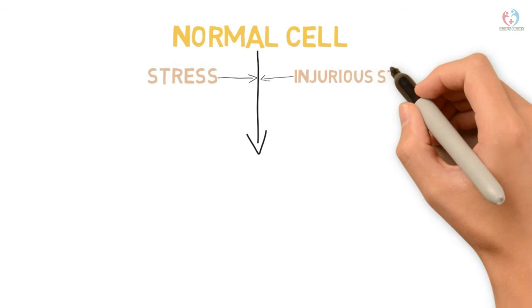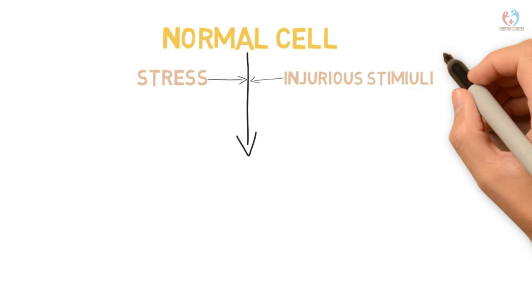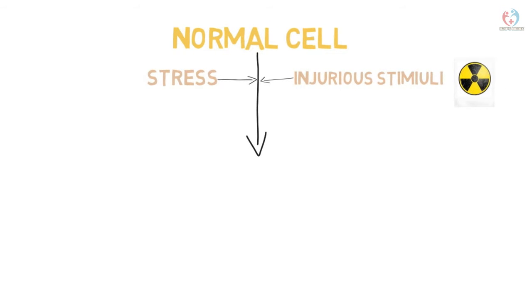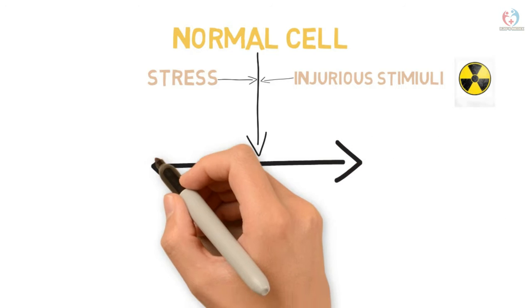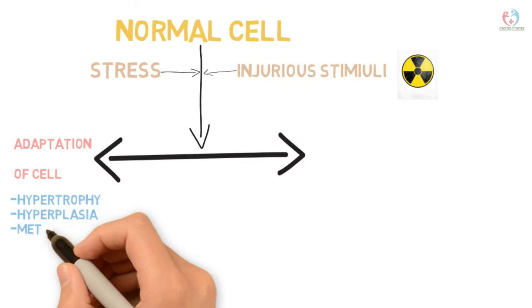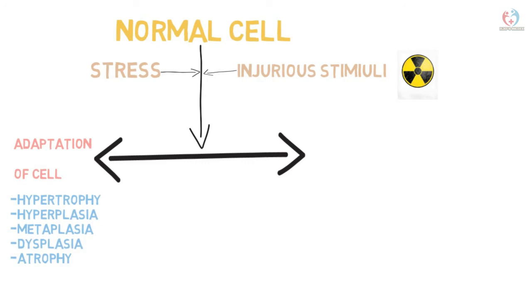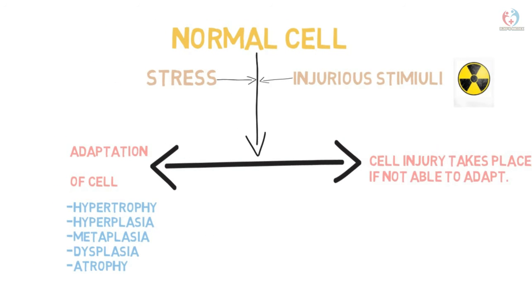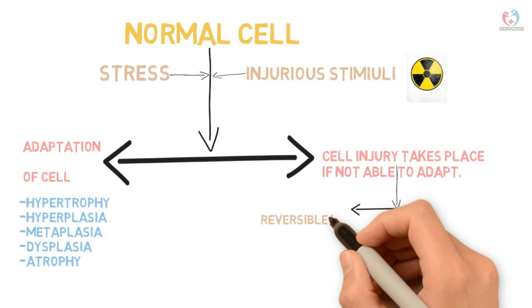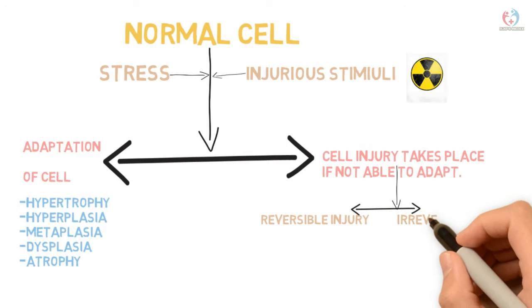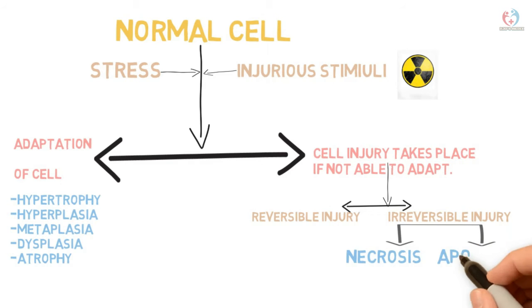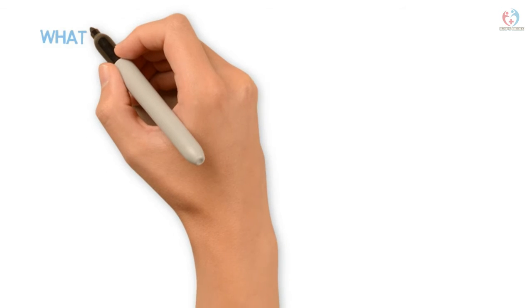Certain adaptation reactions take place in response to stress. If the cell is not able to adapt, it undergoes injury. Adaptations include hypertrophy, hyperplasia, metaplasia, dysplasia, and atrophy. If the cell cannot adapt, injury occurs, classified into reversible injury and irreversible injury. Irreversible injury is further classified into necrosis and apoptosis.